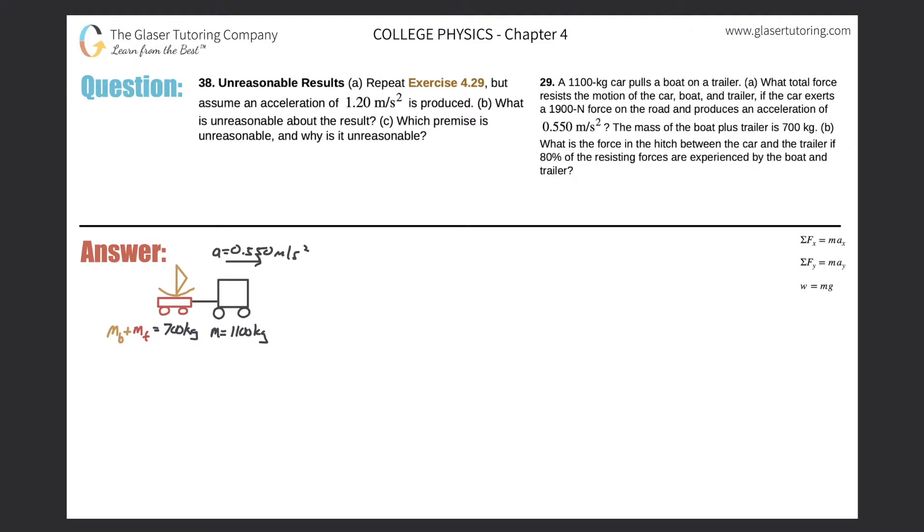Number 38, unreasonable results. Letter A: repeat exercise 4.29 but assume an acceleration of 1.2 meters per second squared is produced. B: what is unreasonable about this result? And C: which premise is unreasonable and why?